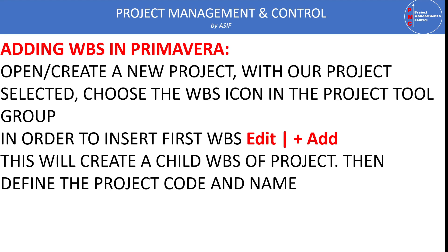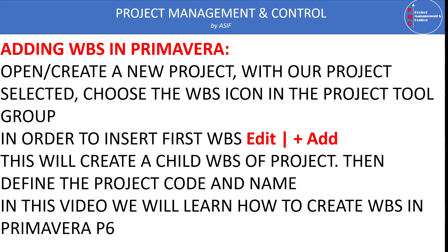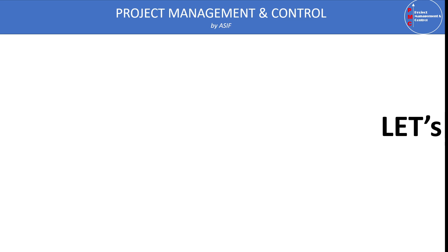Once we have opened the project, we insert the first WBS by going into Edit and clicking the plus button. This will create a child WBS. If you select, for example, design and click the plus button, it will add something under design such as concept design. If you want to make a sibling WBS — meaning a different WBS at the same level — you go to the parent WBS and click the plus button. We will see this in the P6 demo.